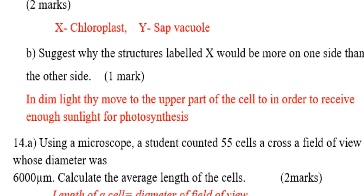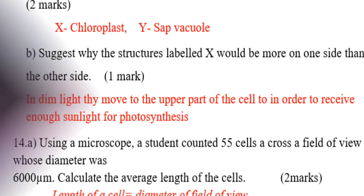Question number 14: Using a microscope, a student counted 55 cells across a field of view whose diameter was 6,000. You are told to calculate the average length of the cells.